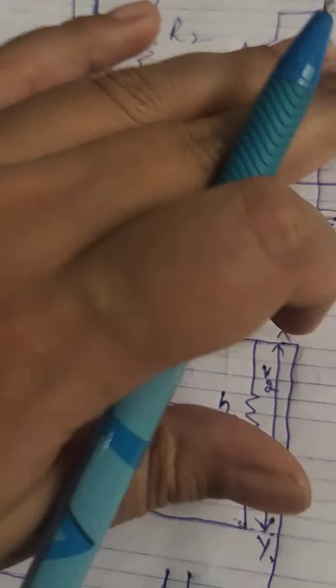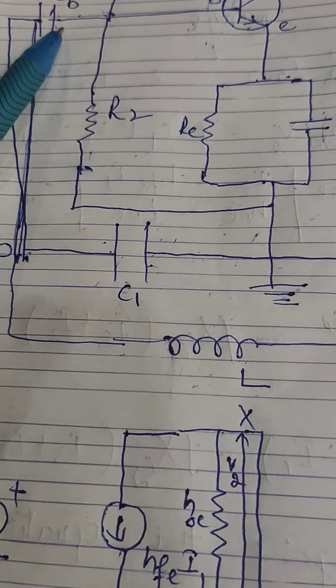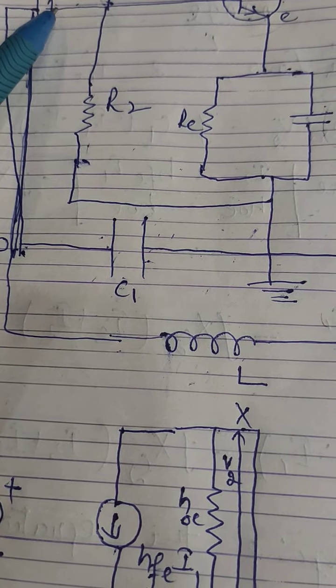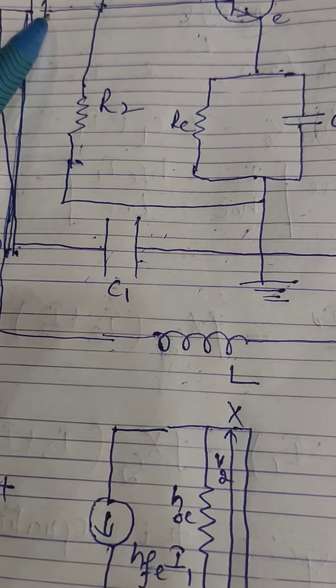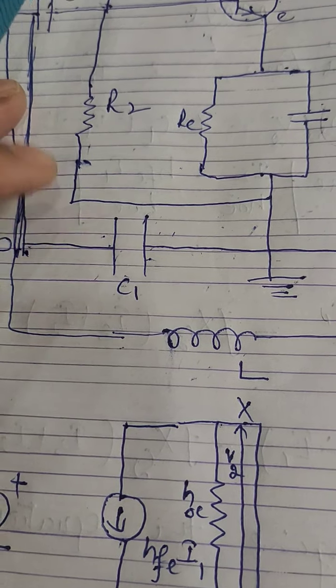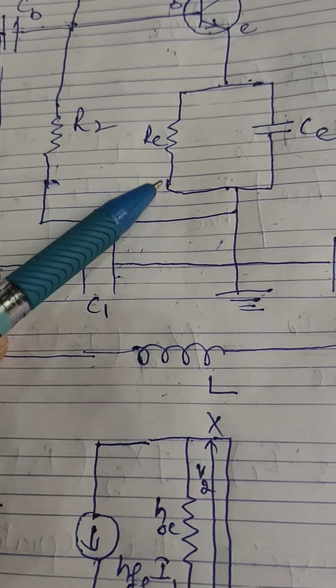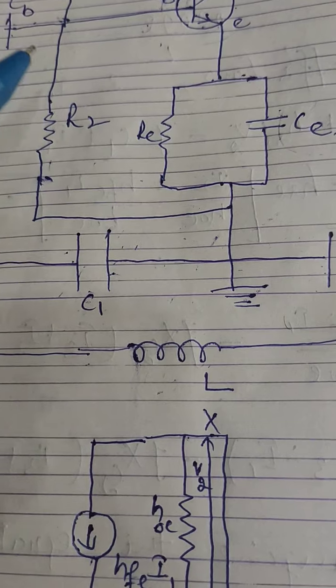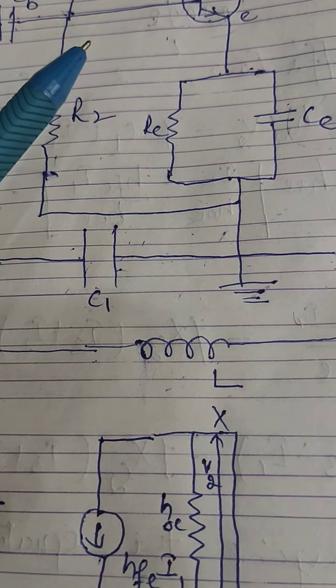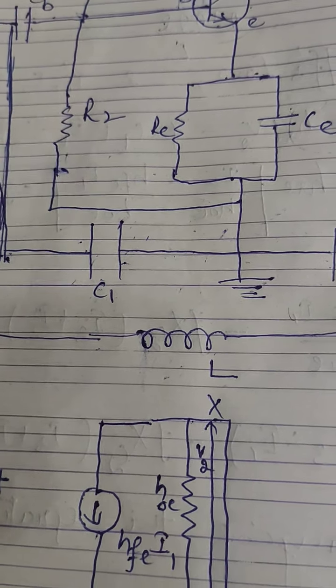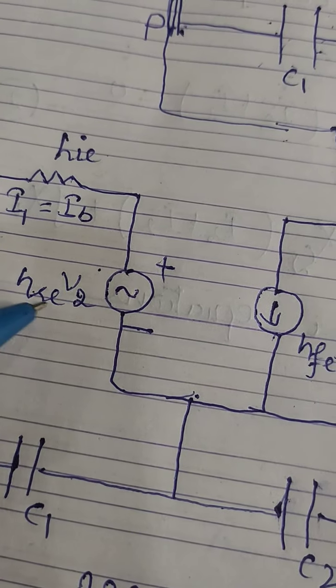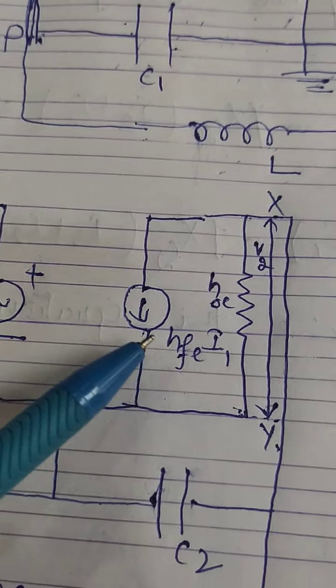The coupling capacitor Cc blocks the DC and provides a path for AC current, acting as an open circuit at zero frequency. Similarly, capacitor Cb has low reactance at the frequency of oscillation, so it is also omitted in the equivalent circuit. R1, R2, Re, and other resistances are very large and do not affect the AC operation of the circuit.